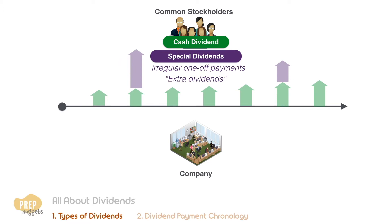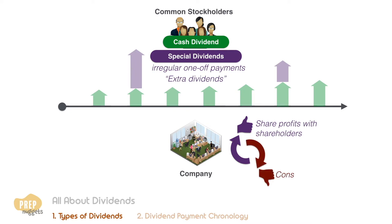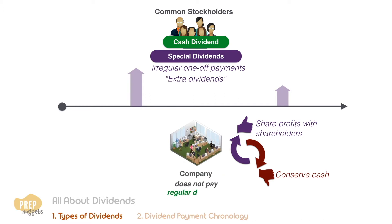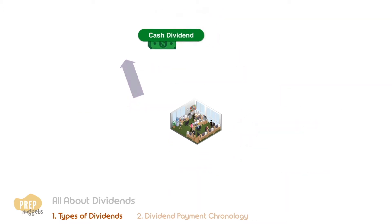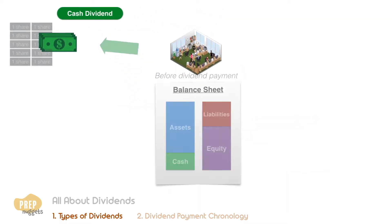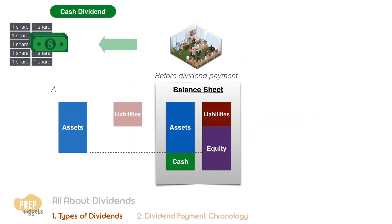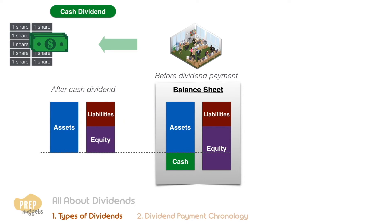Many cyclical firms use special dividends to share profits with shareholders when times are good, but maintain the flexibility to conserve cash when profits are poor. Special dividends can also be paid by companies that do not pay regular cash dividends. When a firm pays out cash dividends, the cash leaves the company's books and equity is reduced by the amount of cash paid out.